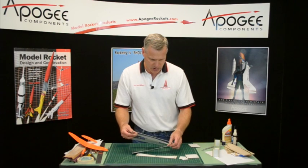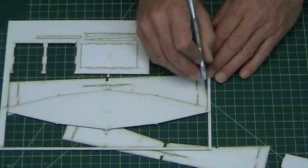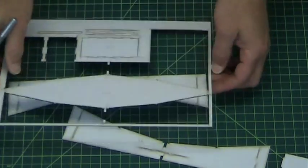Some of them are going to fall out really easy. If they don't, just take your hobby knife and go around the perimeter and find the little tabs and cut those off.